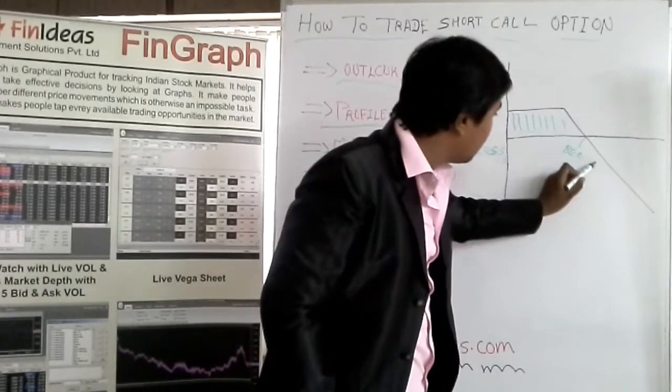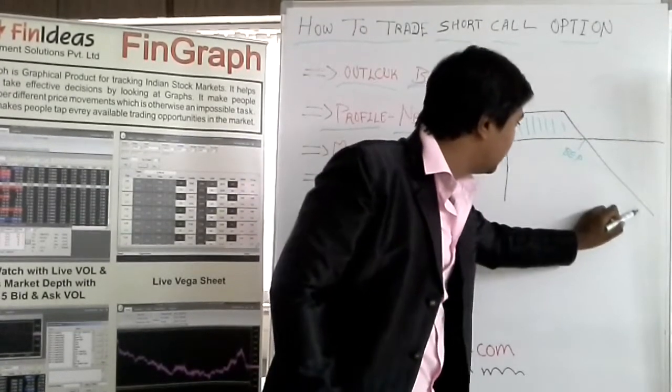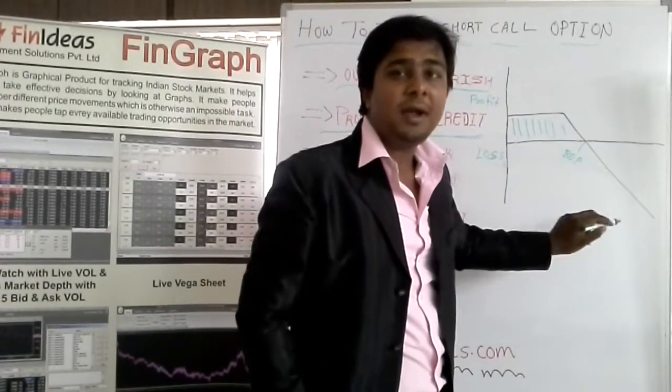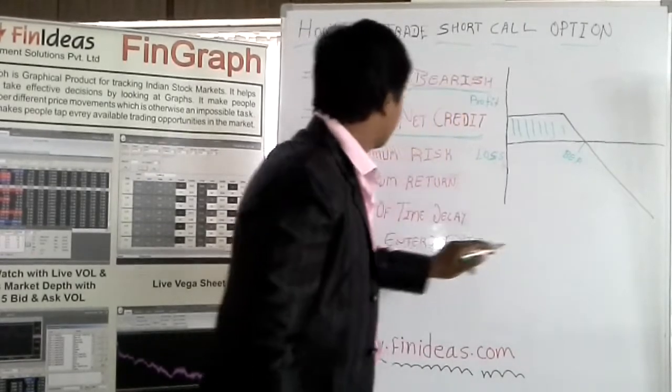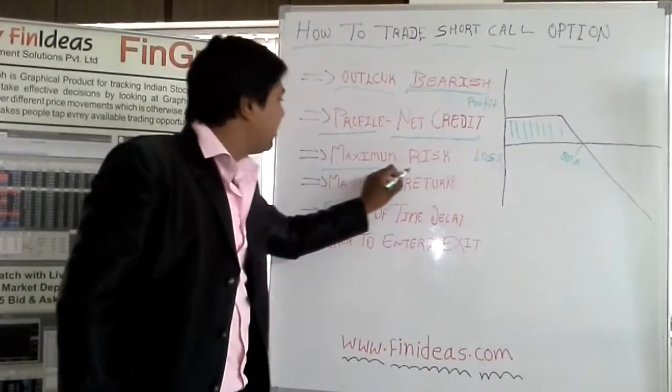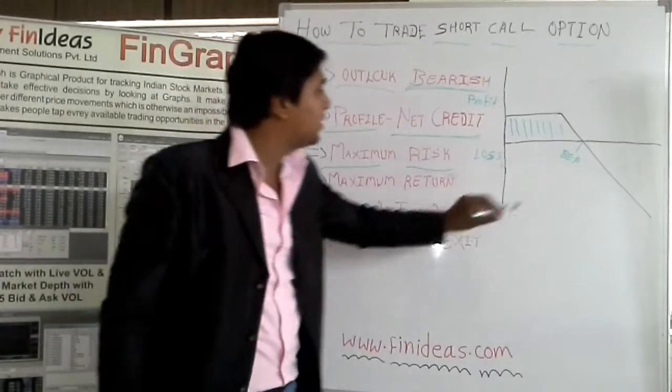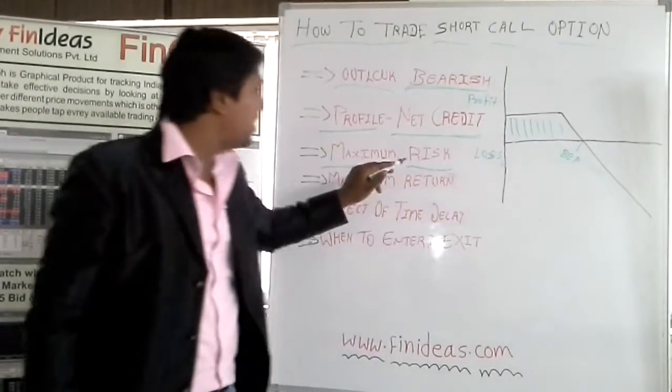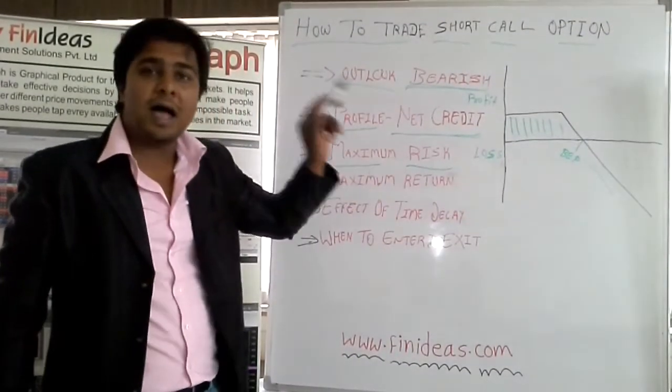When market is moving on the upside you can see over here you are having unlimited loss. So maximum risk you are carrying over here is unlimited when market is on the higher side.